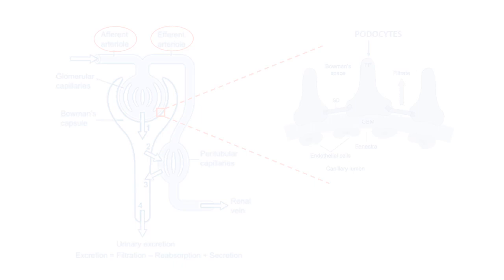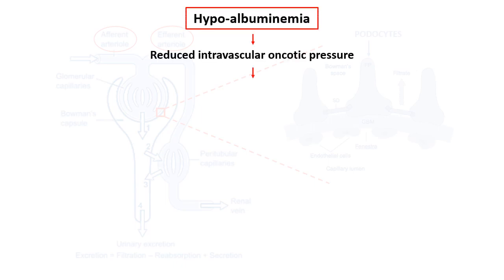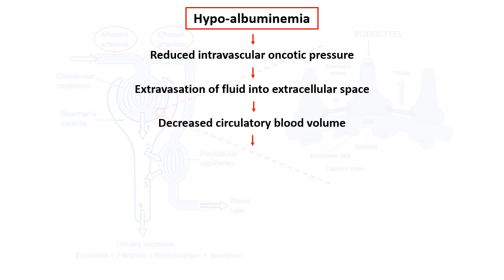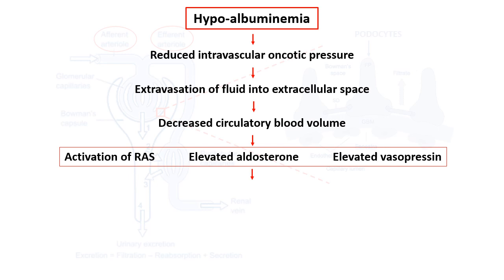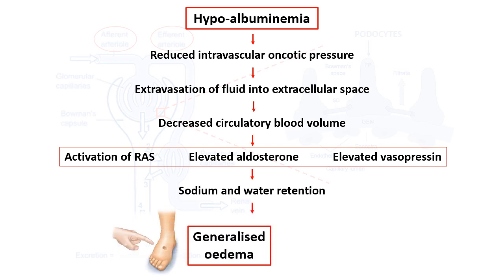Due to hypoalbuminemia, there is reduced intravascular oncotic pressure. As oncotic pressure is a pulling or holding pressure, its reduction causes extravasation of fluid into the extracellular space. This extravasation of fluid causes decreased circulatory blood volume, which leads to activation of the renin-angiotensin system, elevated aldosterone, and elevation of vasopressin. These three together cause sodium and water retention, which leads to edema.